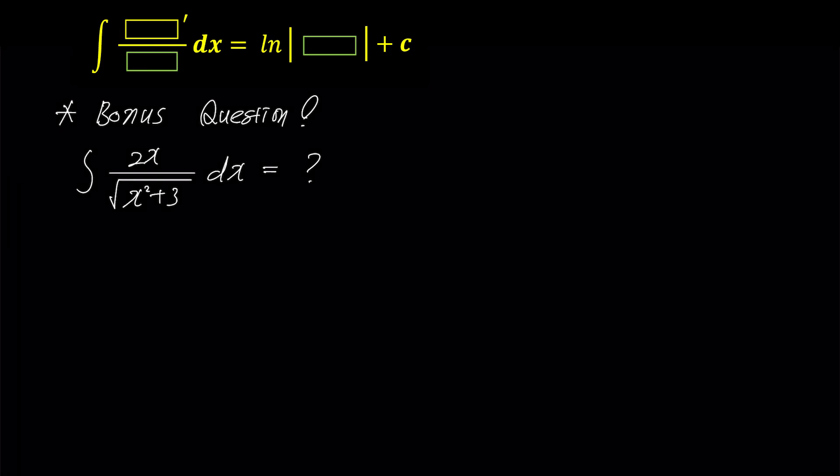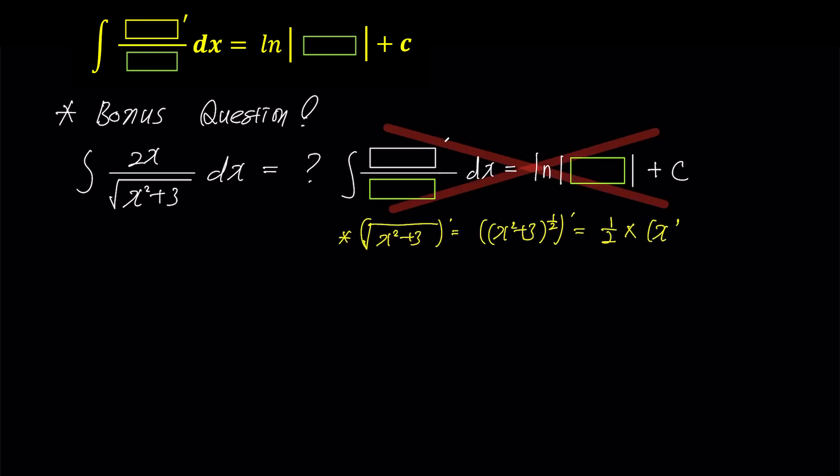Here's a bonus question. This is a problem that some of my students often make mistakes on. You should not use the box rule for fractions because the derivative of square root x squared plus 3 is significantly different from the 2x in the numerator. So what should we do? How about bringing the square root term to the numerator? Then it becomes 2x times x squared plus 3 to the power of negative half, and this problem becomes a basic box rule problem.